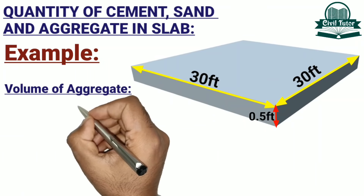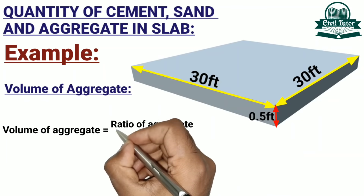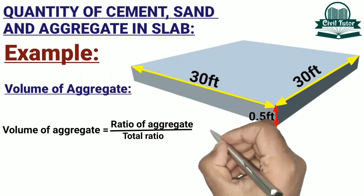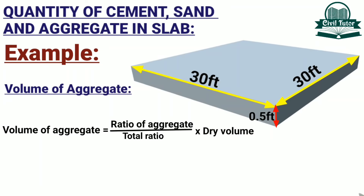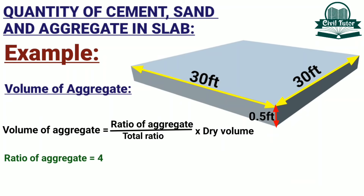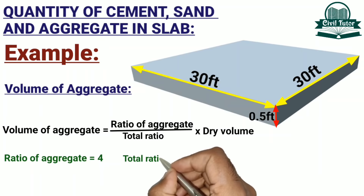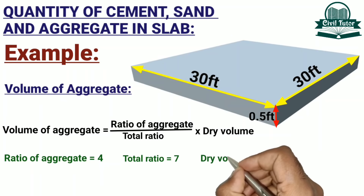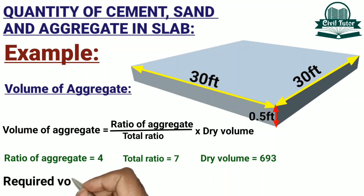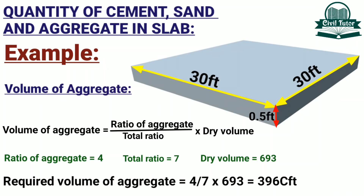The volume of aggregate equals ratio of aggregate divided by total ratio, multiplied by dry volume of slab. The ratio of aggregate is 4, the total ratio is 7, and the dry volume is 693 cubic feet. Substituting these values, the required volume of aggregate is 396 cubic feet.